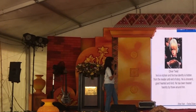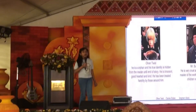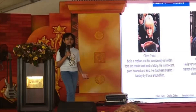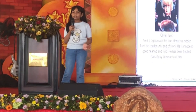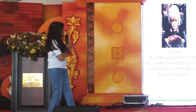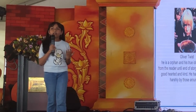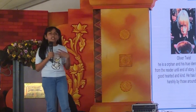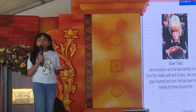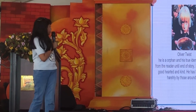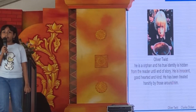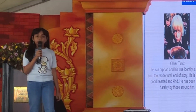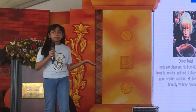So, these are the main characters. Oliver Twist is our protagonist of the story. He's an orphan, and his true identity is hidden from the reader until the end of the story. He's innocent, kind-hearted, and a really good boy, and he has been treated really harshly by all around him. Mr. Bumble is a cruel, self-important man, and he's the master of the workhouse. He treats children really badly.